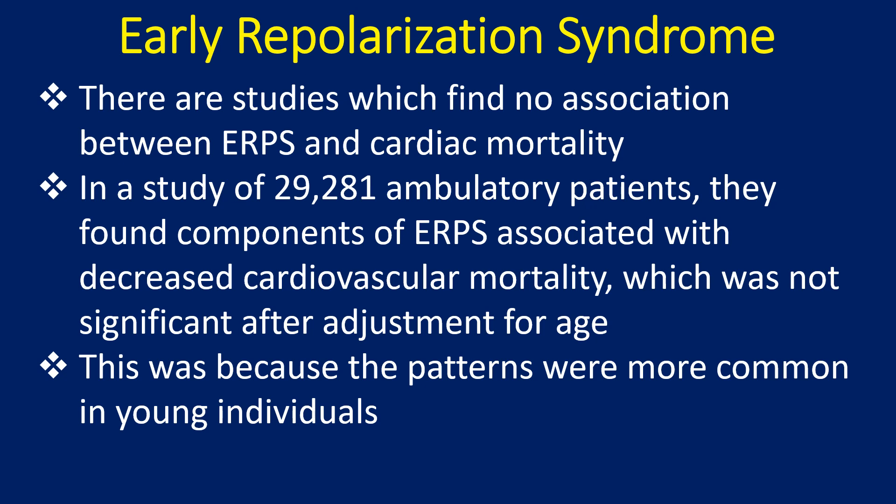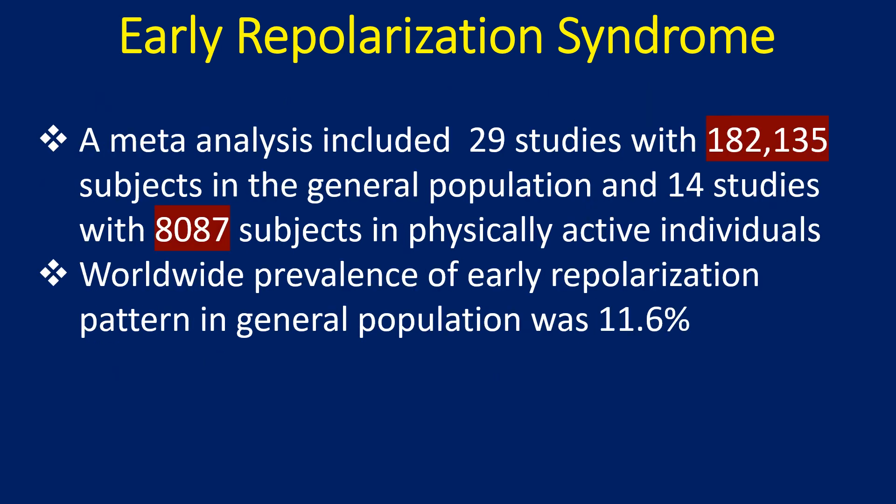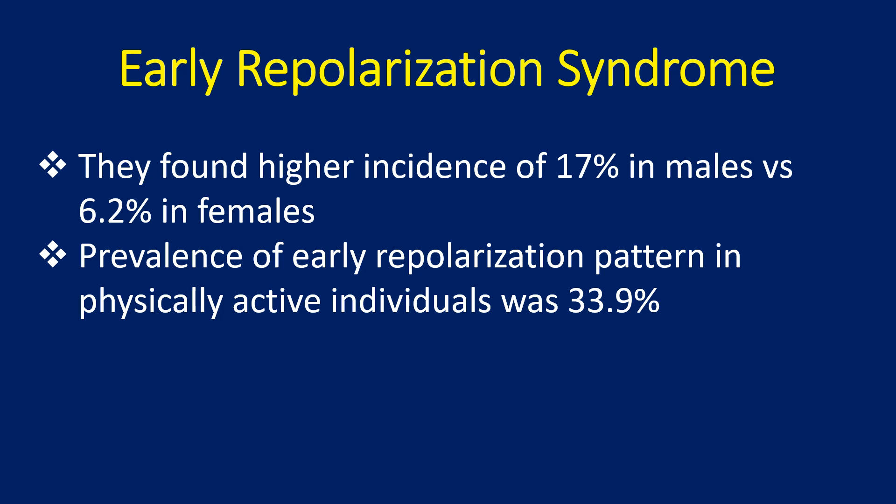There are studies which find no association between ERP syndrome and cardiac mortality. In a study of 29,281 ambulatory patients, components of ERP syndrome were found associated with decreased cardiovascular mortality, which was not significant after adjustment for age, because the patterns were more common in young individuals. A meta-analysis included 29 studies with 182,135 subjects in the general population and 14 studies with 8,087 subjects in physically active individuals. Worldwide prevalence of early repolarization pattern in the general population was 11.6%, with higher incidence of 17% in males versus 6.2% in females. Prevalence in physically active individuals was 33.9%.